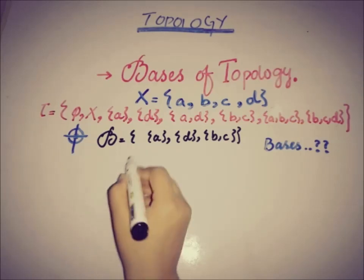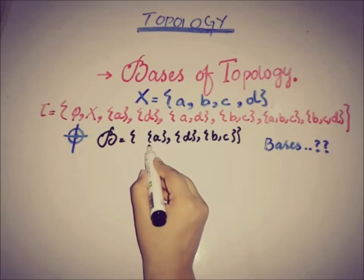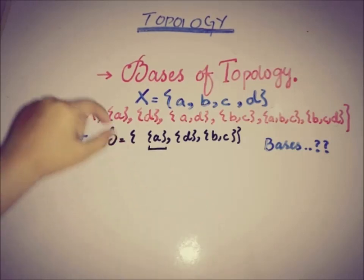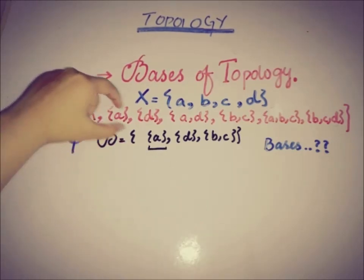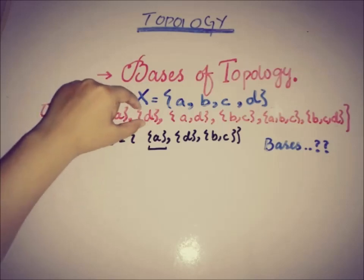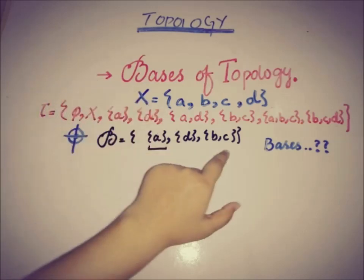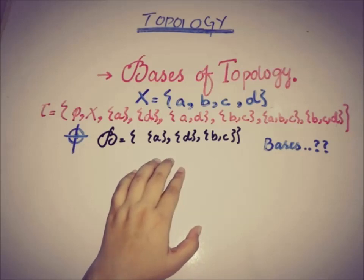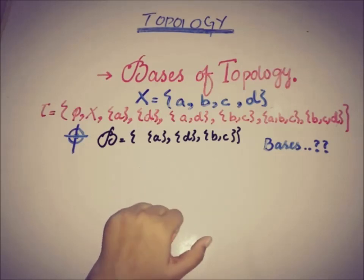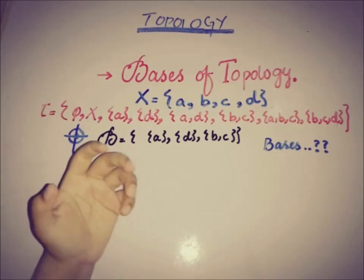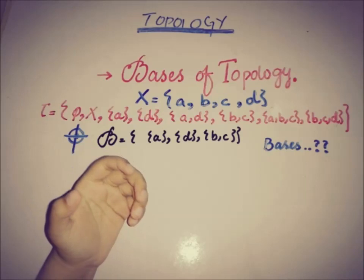If we take the element {a}, it is a member of this topology. Then {d} is also a member. Then {b, c} is also a member. So we verify the individual basis elements are open sets in tau.